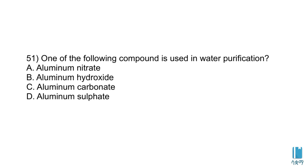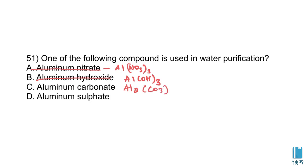A is aluminum nitrate. B is aluminum hydroxide. C is aluminum carbonate. The correct answer is D - aluminum sulfate. This is the compound used in water purification.